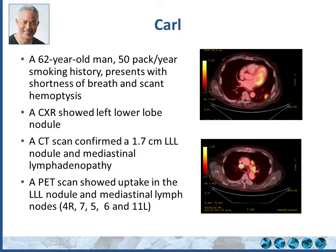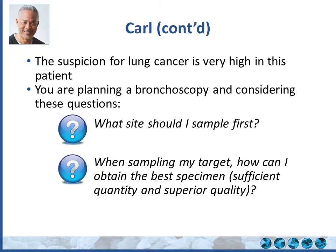So there's a lot of activity in this patient in the mediastinum and hilar area. The suspicion for lung cancer is very high — he smoked 50 pack-years, has a lung nodule, and mediastinal lymph nodes. You're planning a bronchoscopy and thinking: what side should I sample first? When sampling my target, how can I obtain the best specimen with sufficient quantity and superior quality? These are the two things we must ensure when sampling tissue for suspected lung cancer.